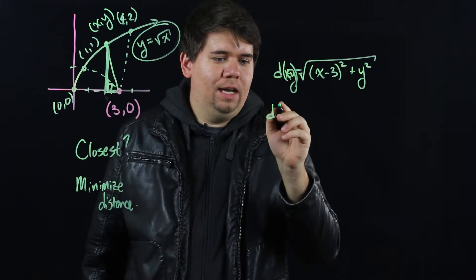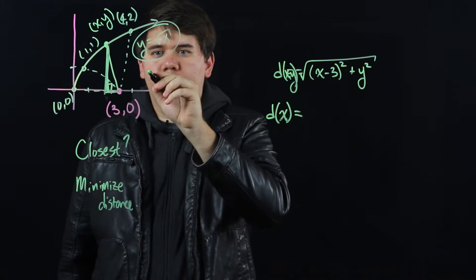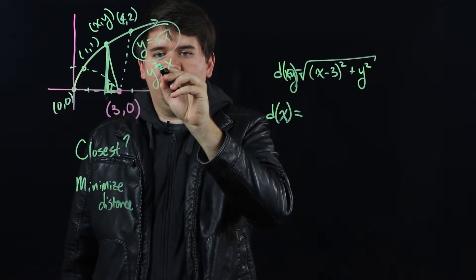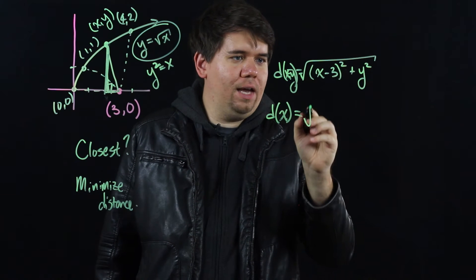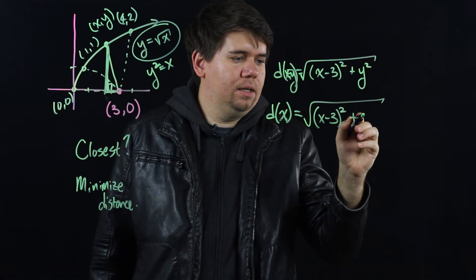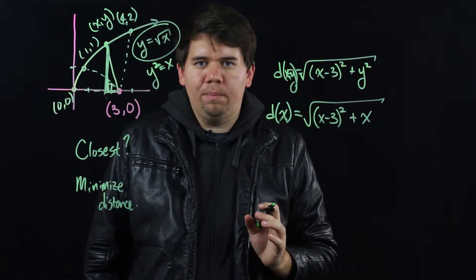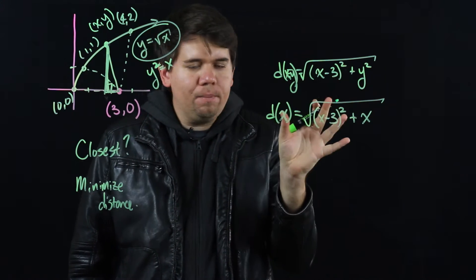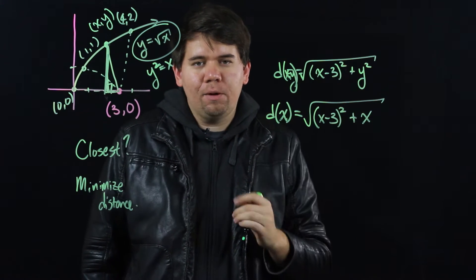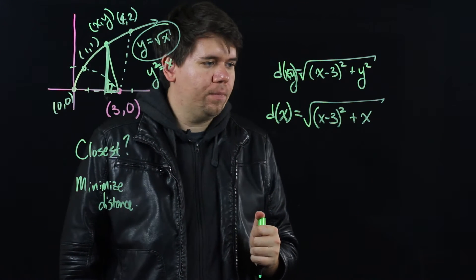Hence we could rewrite this as just a function of x, because y squared would be x, since y is the square root of x. Hence your function of x is just the square root of (x-3) squared plus x. Here's a function that we want to minimize. And we know what to do to minimize it. To find the minimum we'll take the derivative, we'll set the derivative equal to 0, and then we'll double check that really is a minimum and not a maximum.